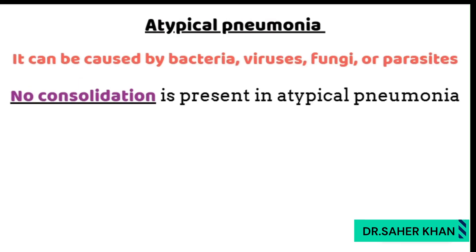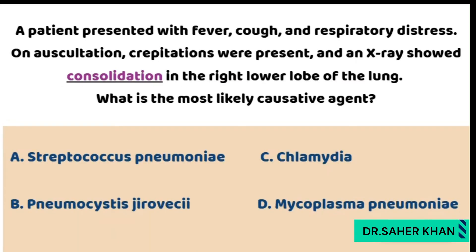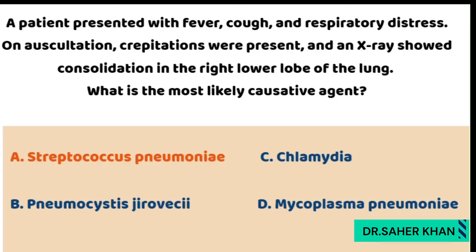Atypical pneumonia can be caused by bacteria, viruses, fungi, and parasites, and no consolidation is present in atypical pneumonia. Examples include bacteria like Mycoplasma pneumoniae, viruses like coronavirus and influenza, fungi like Pneumocystis jirovecii, and some parasites. Since the question clearly mentions consolidation, the patient has typical pneumonia, which is always caused by bacteria. The most common cause is Streptococcus pneumoniae, which is listed in the options — so the correct answer is Streptococcus pneumoniae. The other options fall under the atypical pneumonia category.